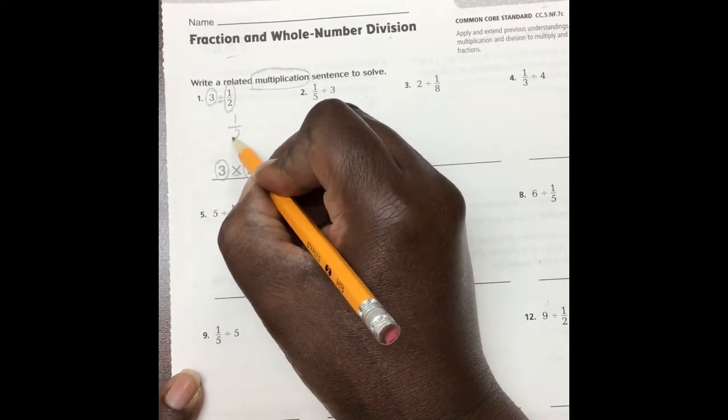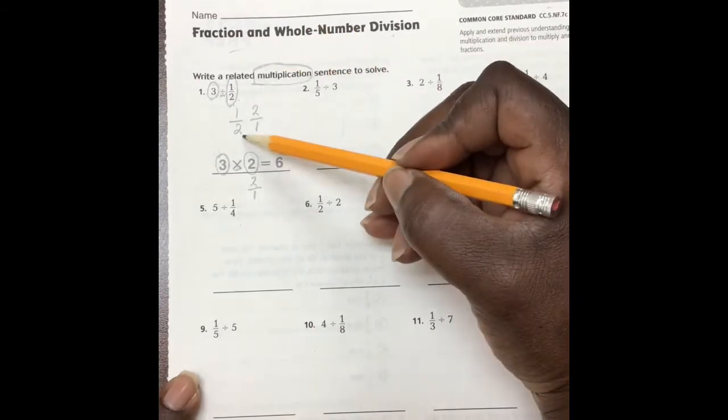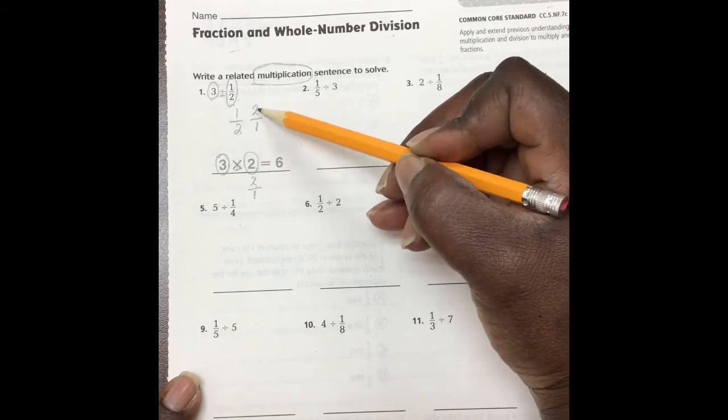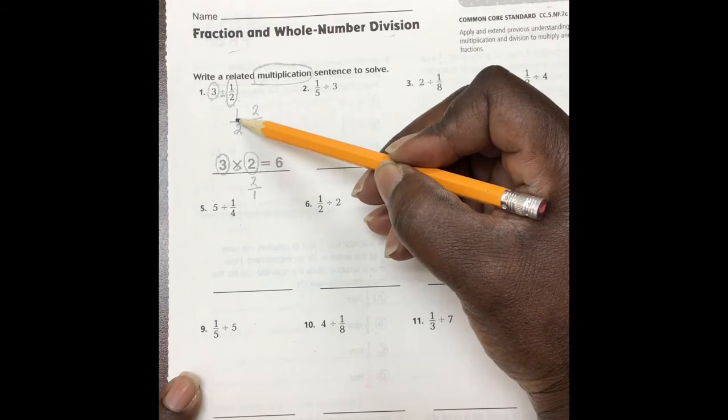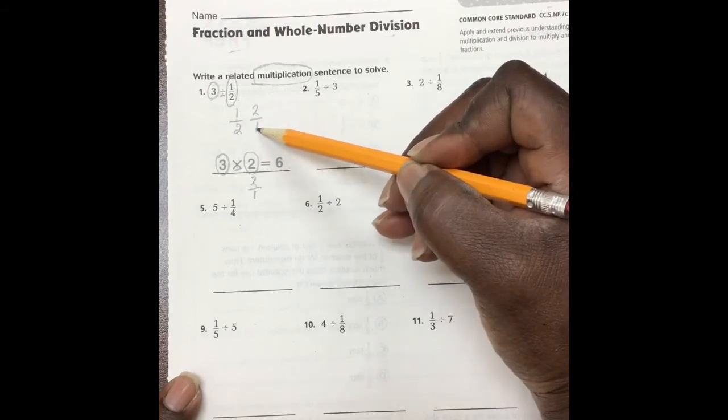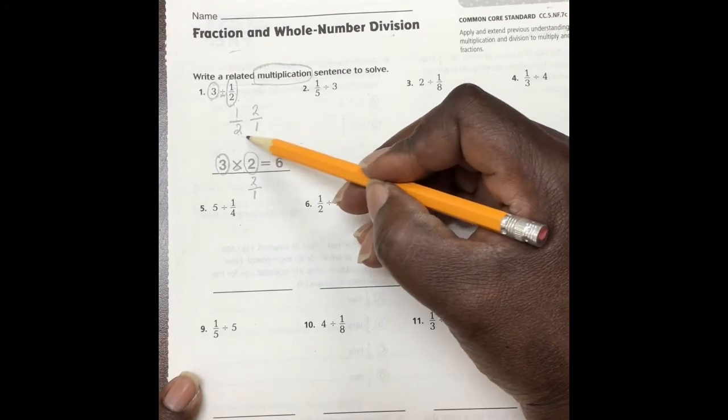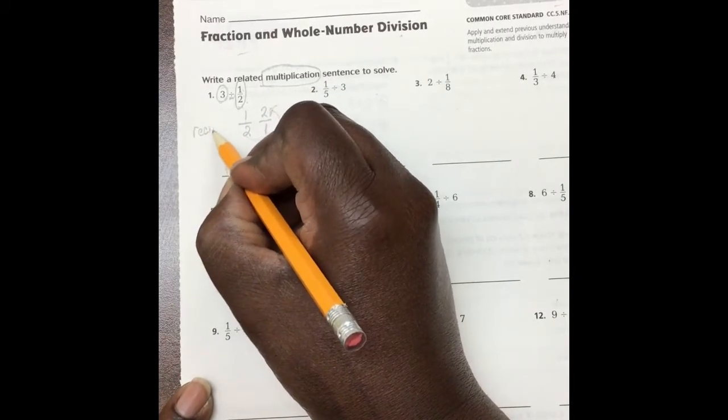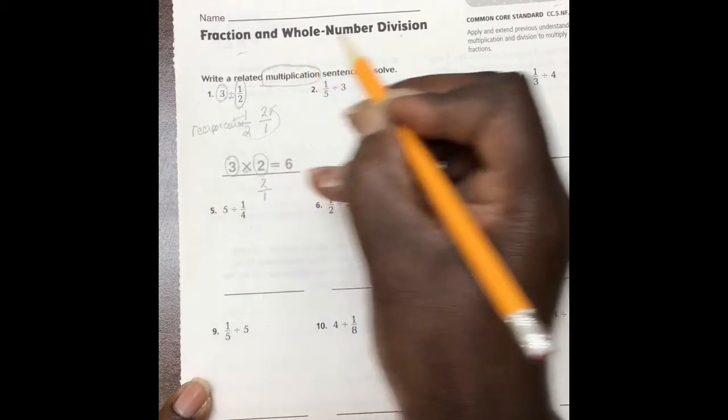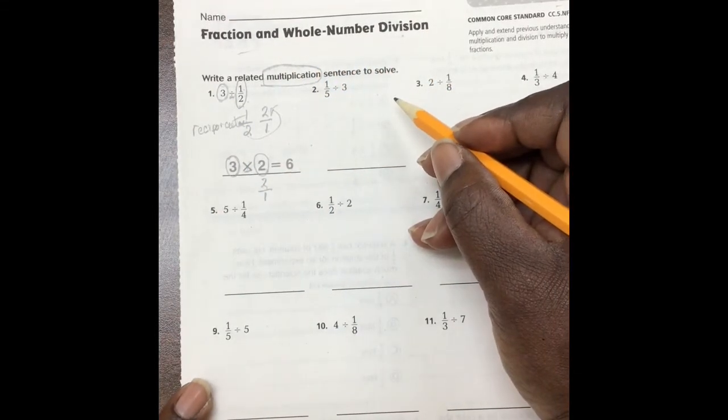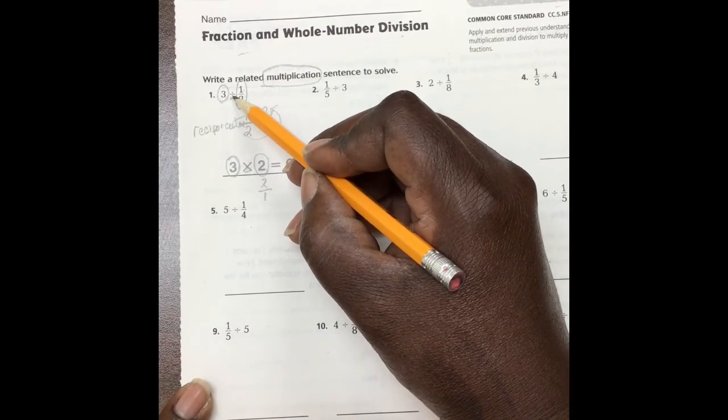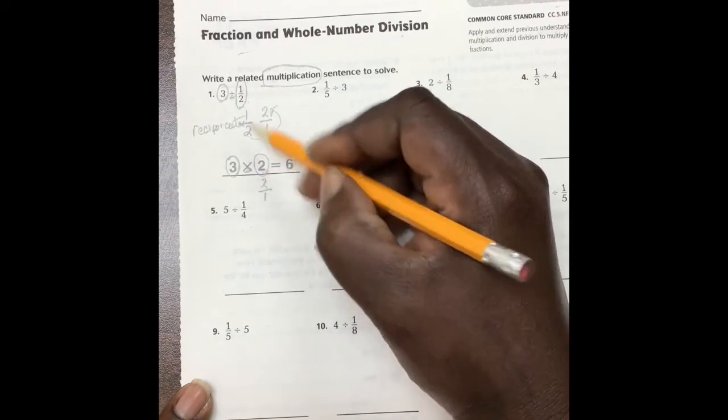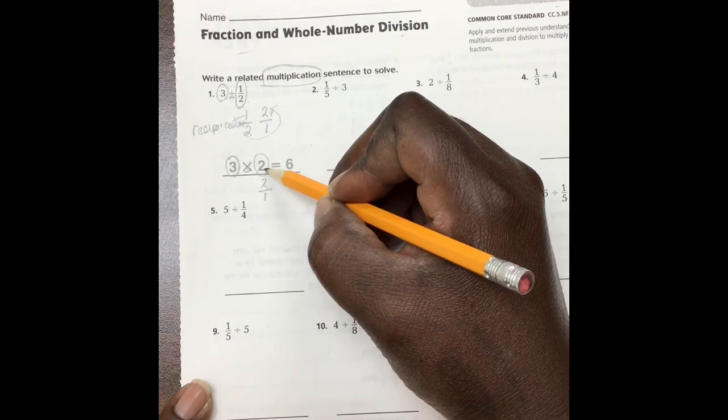1 half compared to 2 over 1. Oh, instead of the 2 being on the bottom, the 2 is on the top. Instead of the 1 being on the top, the 1 is on the bottom. So, we switched, or what we know to be, we reciprocated. And so, therefore, as a result of this division changing to a multiplication, the number or the fraction that followed the division was reciprocated. It changed. It flipped.